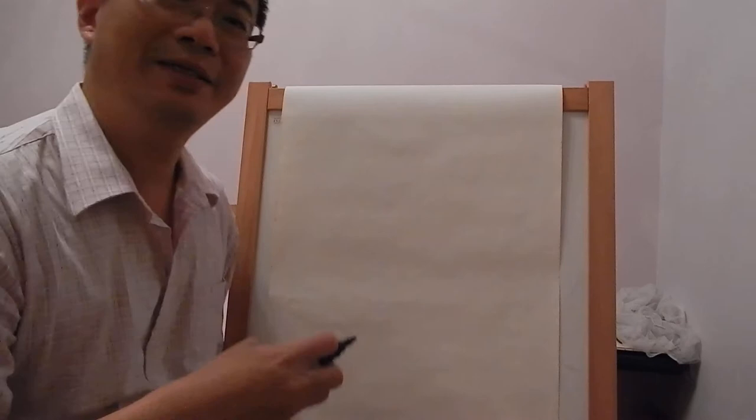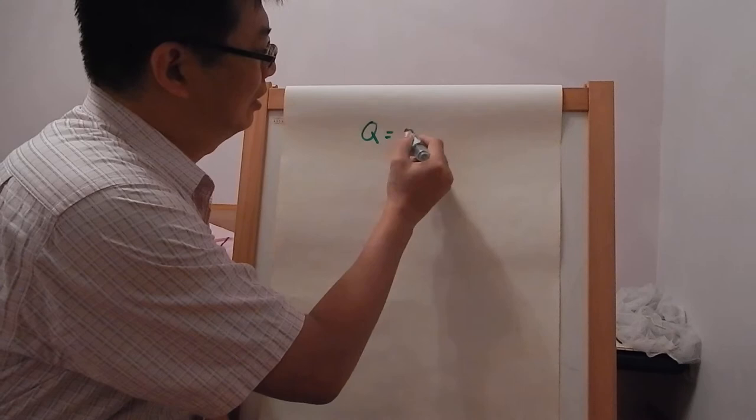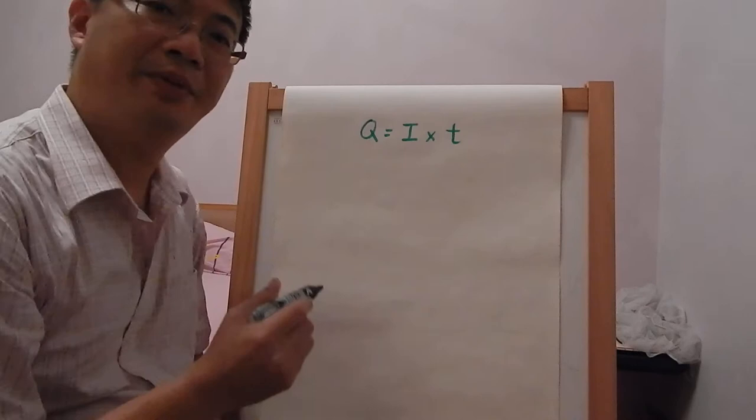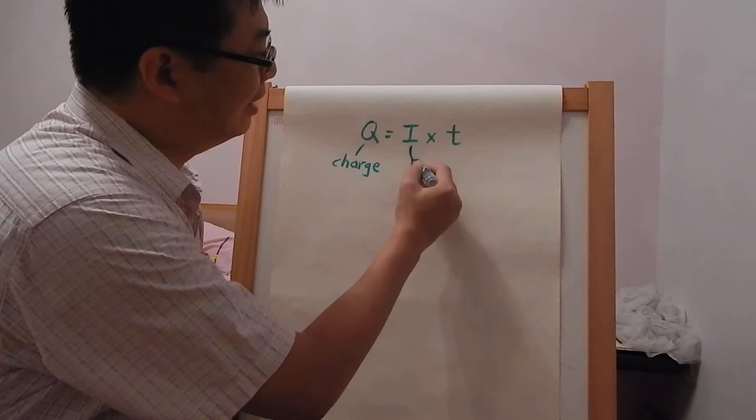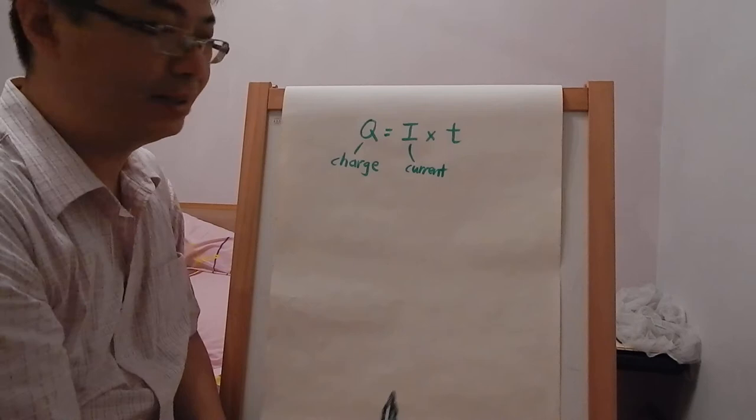Hi, good morning. Today we're going to revise this equation: charge equals current times time, or Q = I × t. Q is electric charge, which can be either positive or negative. I is current, the electric current in amperes, and time must be in seconds.